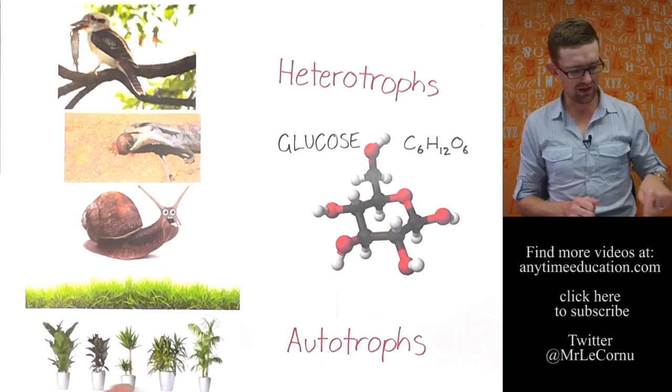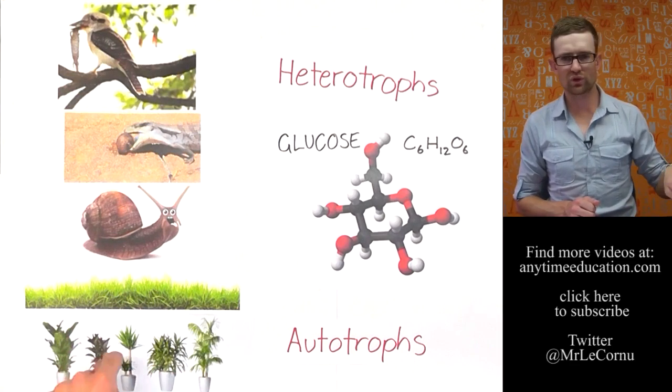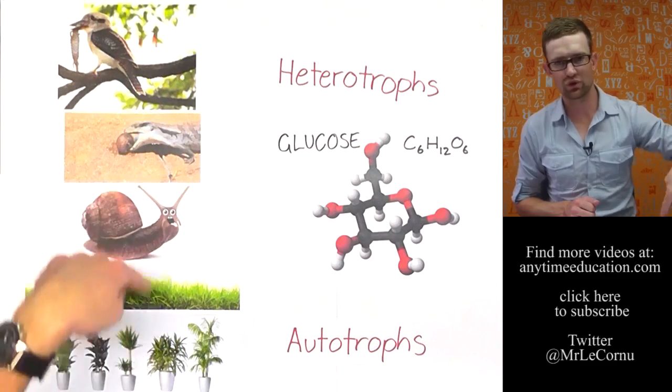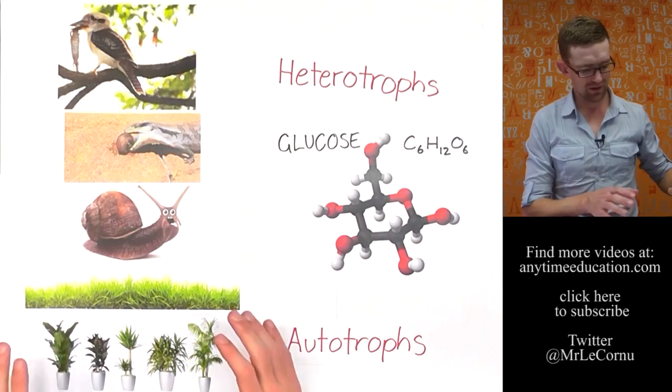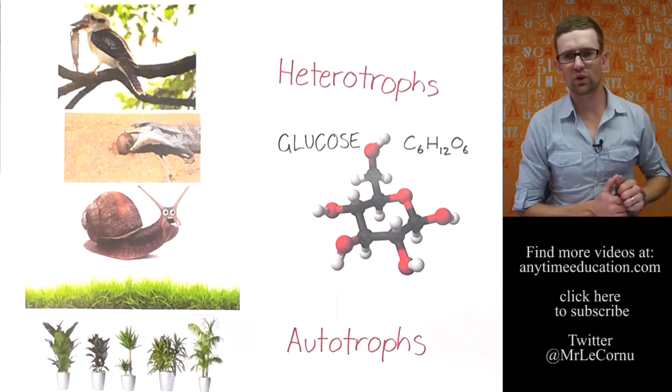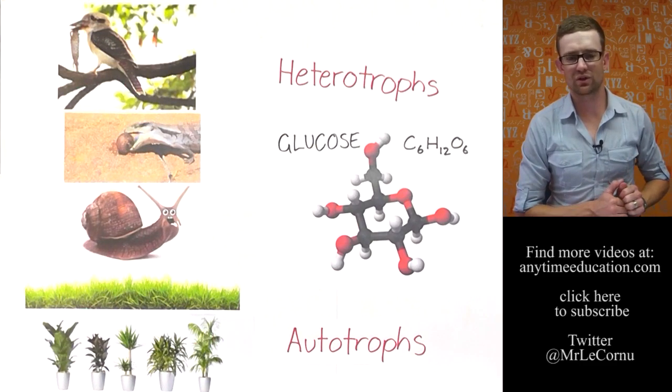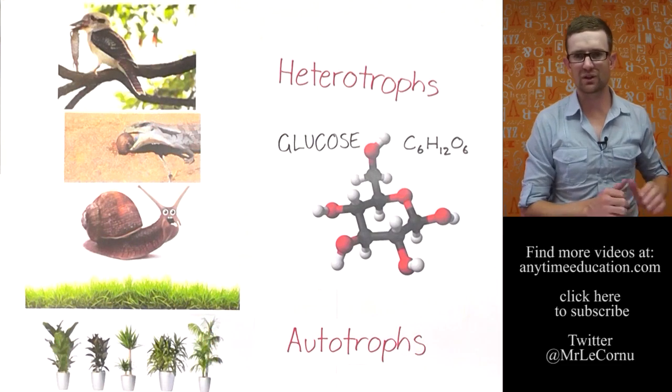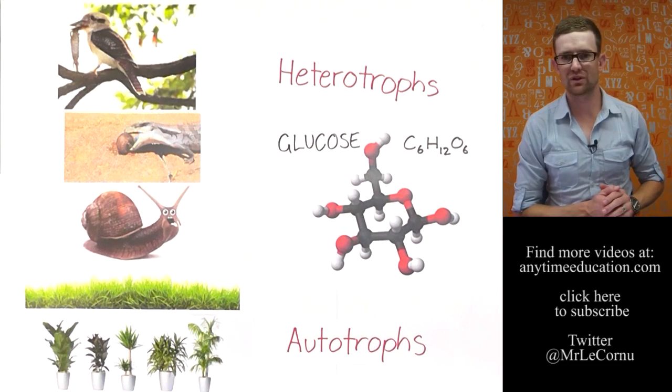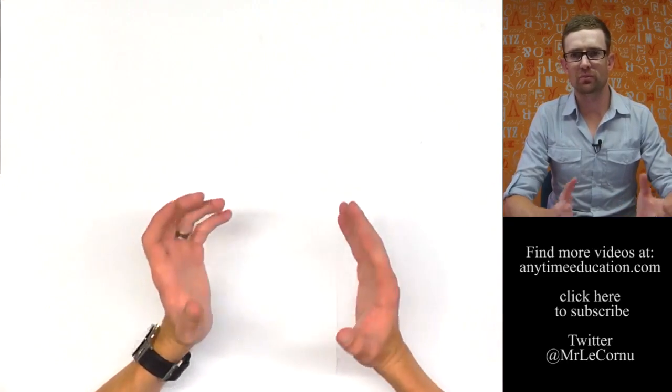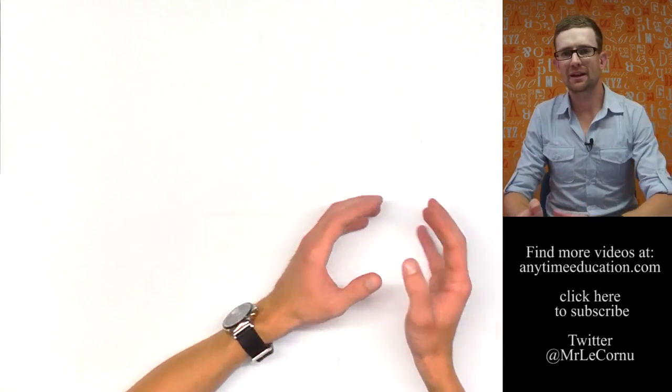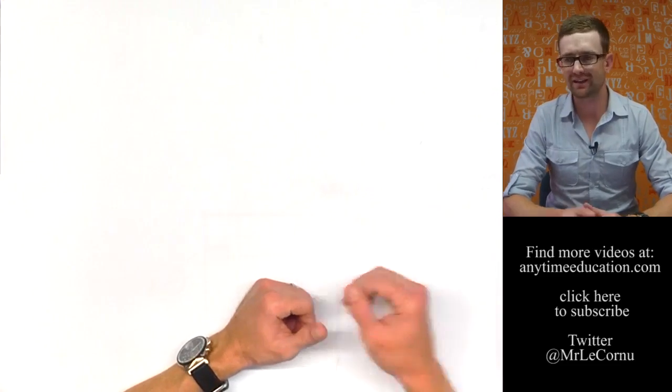The important thing to remember is that's why we call autotrophs producers, because they produce glucose for the rest of the food chain. But remember, they're not doing it for the consumers, the heterotrophs. They're making the glucose for themselves as their own source of energy. So we know where glucose comes from. Autotrophs make it. Heterotrophs consume other organisms to get it.